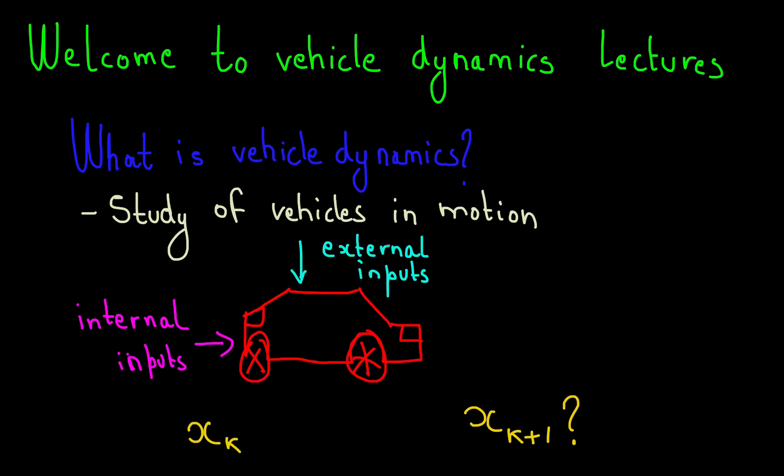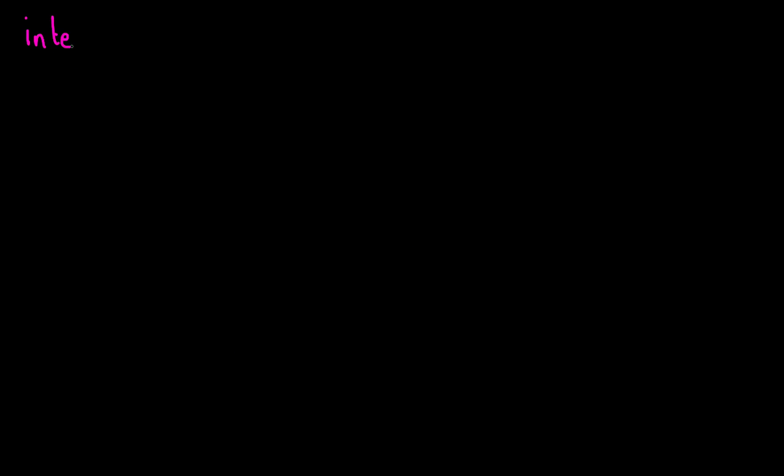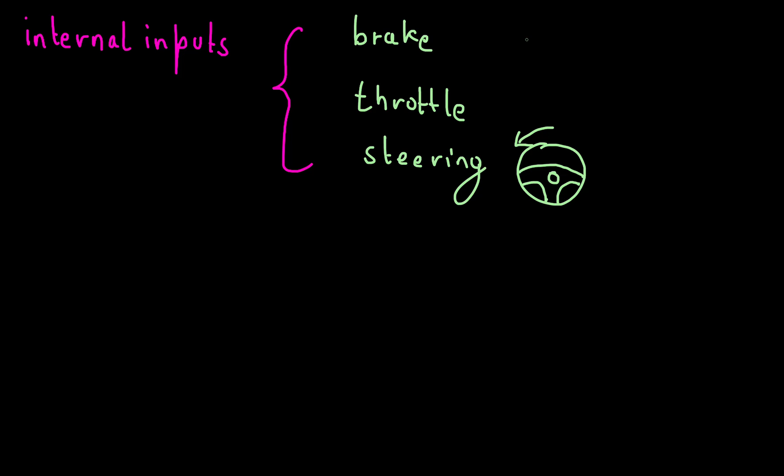Let's try to see what some of these inputs look like. Common examples of internal inputs include things like brakes, throttle, and steering. These are essentially all the controls available to you as a driver. And many of us have very strong mental models of how these inputs affect the behavior of our cars.